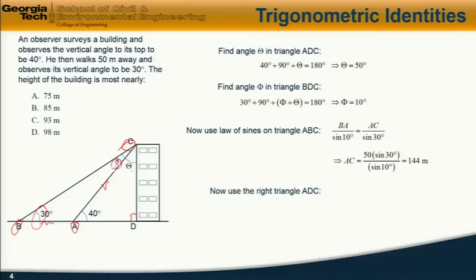The final step is to look at triangle ADC to find the height of the building. There we see that DC equals AC sine 40 degrees. In other words, 144 sine 40, which is 92.6 meters, so the answer is C.